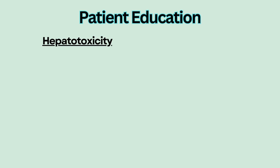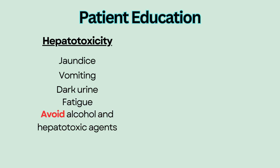Patient Education. Hepatotoxicity, or liver damage, is a major side effect of isoniazid. Educate patients to monitor for and report signs and symptoms of hepatotoxicity. These include jaundice or yellowing of the skin and sclera, vomiting, dark urine, and fatigue. Patients should avoid use of alcohol and other hepatotoxic medications.